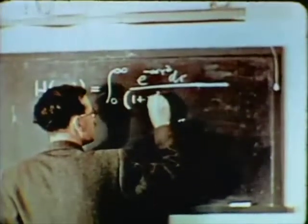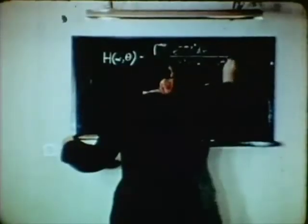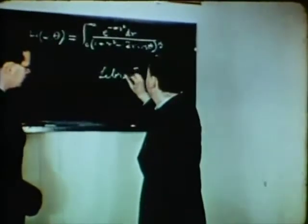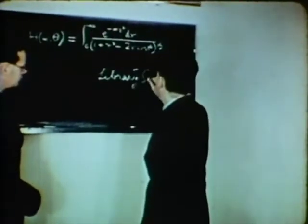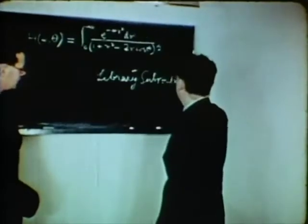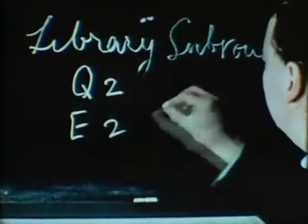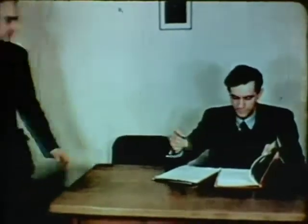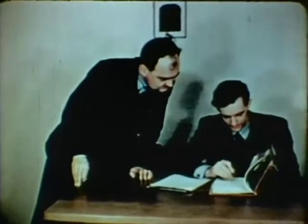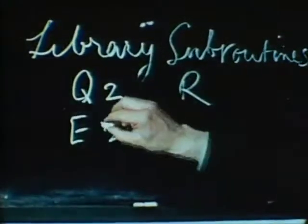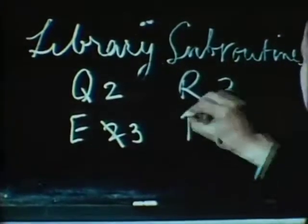The Mathematician explains his problem to a committee of experts. The first thing to do is to make a list of the library subroutines that will be needed: a subroutine for quadrature, one for the exponential function. A member of the committee interrupts to point out that there is a more suitable exponential routine available, a read routine and a print routine.